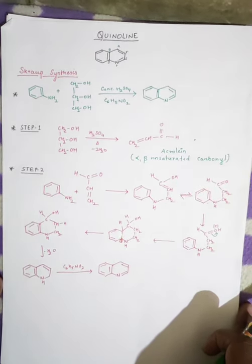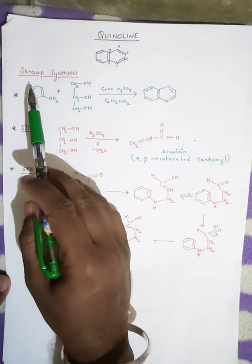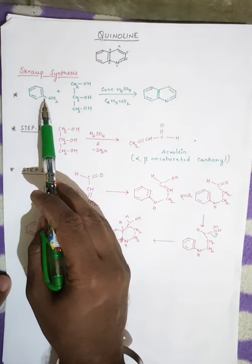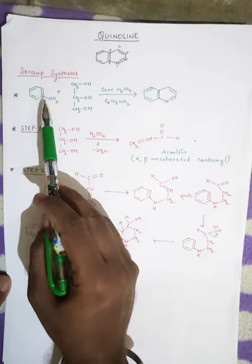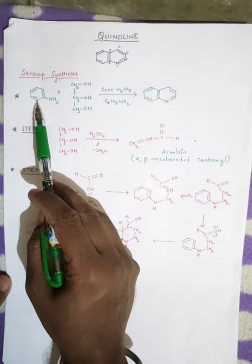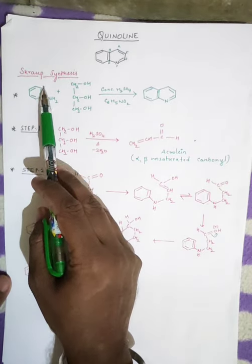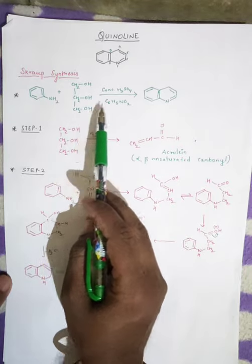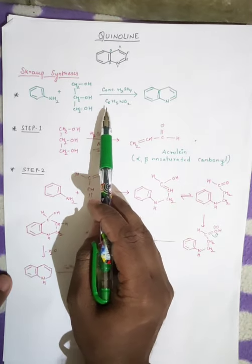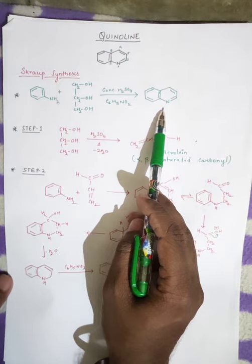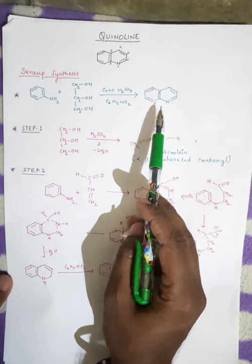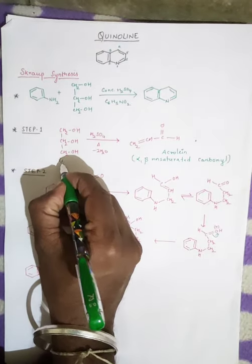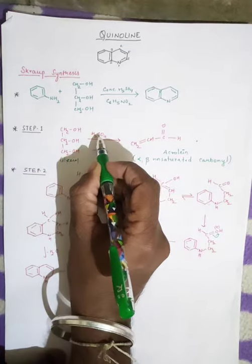Now we are going to study the synthesis and reactions of quinoline. The first synthesis we are going to study is Skraup synthesis, where an aromatic amine with vacant ortho positions — this is aniline with no substitution at the ortho positions — reacts with glycerol in presence of concentrated H₂SO₄ and C₆H₅NO₂ to give quinoline.